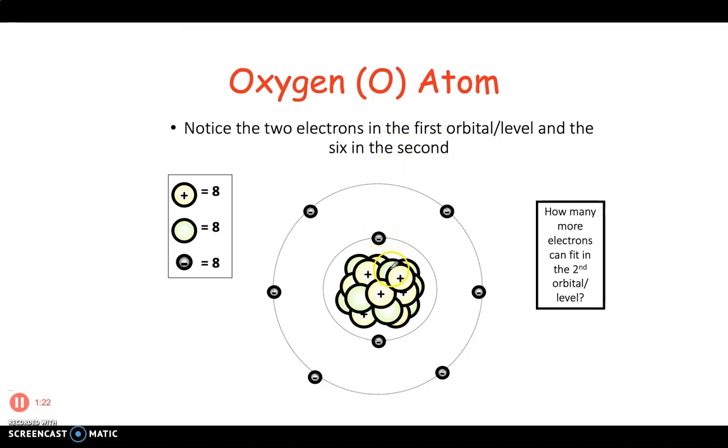Oxygen is an atom with eight protons which are positively charged within the nucleus and eight neutrons as well, and eight electrons which is the same as the number of protons always, except when it's an ion. The eight electrons arrange themselves in a particular way: two electrons in the first shell and six electrons in the outer shell.